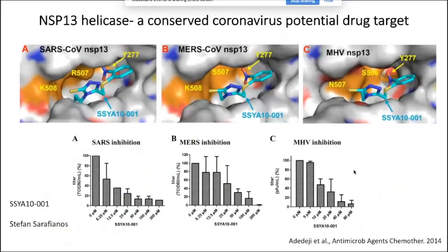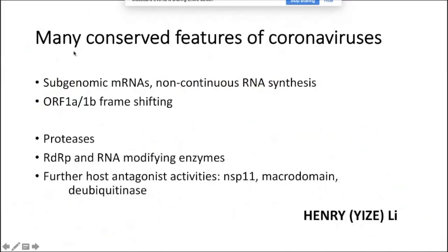To summarize this section, there are many conserved features of coronaviruses: their subgenomic mRNAs, non-continuous RNA synthesis, ORF1A/1B frameshifting. Among the proteins: the proteases, the RDRP and RNA-modifying enzymes, and further host antagonist activities including NSP1, macrodomain, and deubiquitinase. Henry Lee, speaking later today, will discuss in more detail some research that our lab has done on these non-structural proteins.